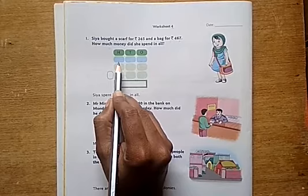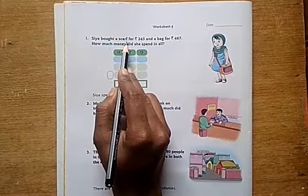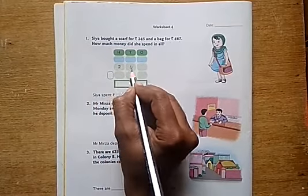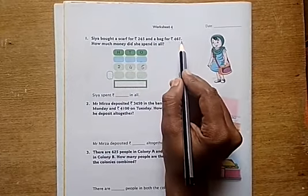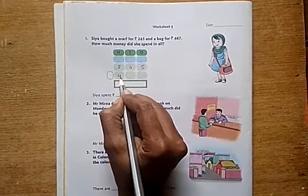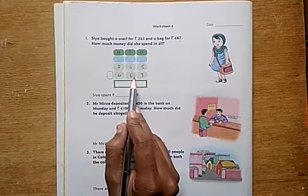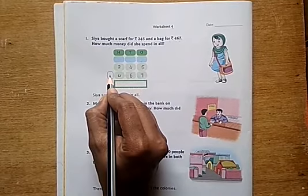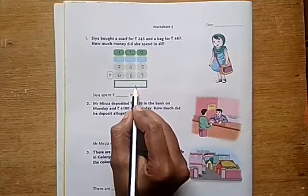Arrange these two numbers here. She bought a scarf for 245 rupees, and a bag for 467 rupees. Add these numbers. Which arithmetic operation are we using here? That is addition. Write that sum in this blank.